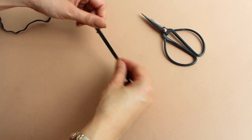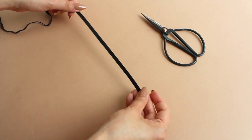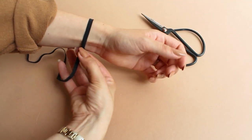Next we need to cut the elastic. Wrap the elastic around your wrist and leave out extra 2 cm.